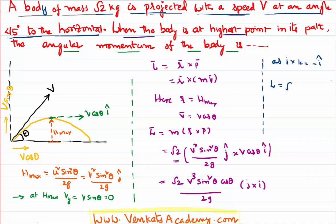Angular momentum will become root 2 V cube. Theta is given like 45, sin square 45 is nothing but equal to 1 by 2, cos theta is 1 by root 2, by 2g.